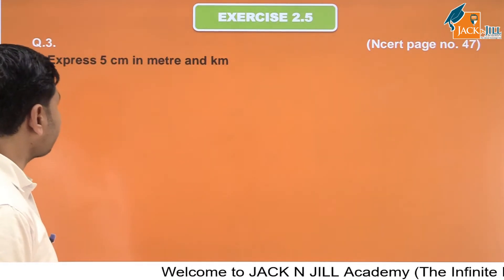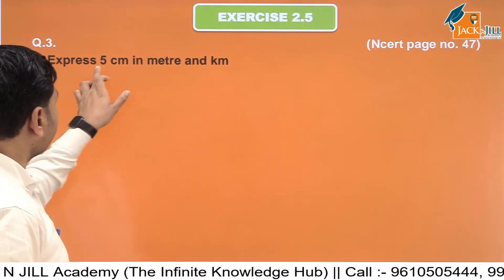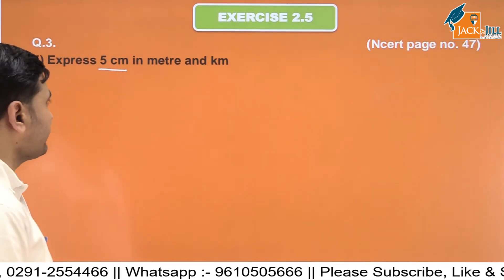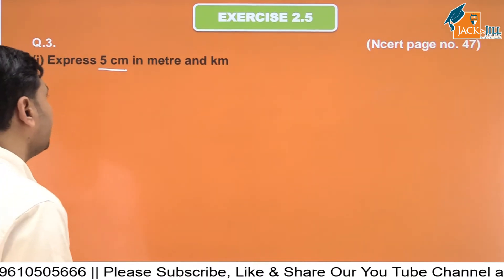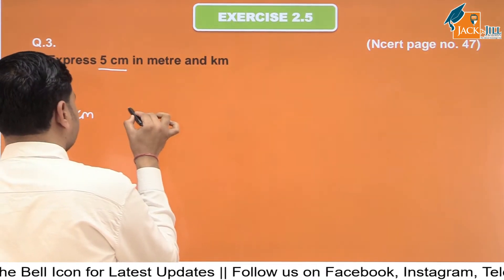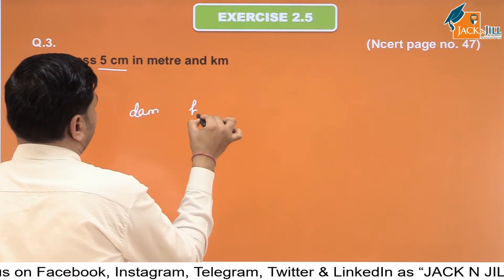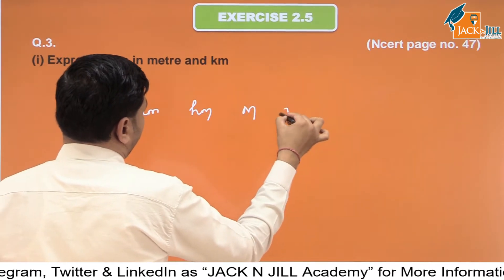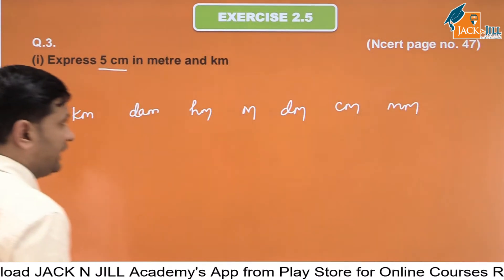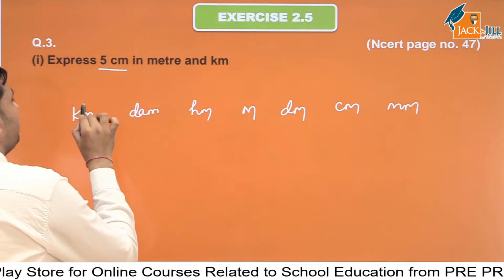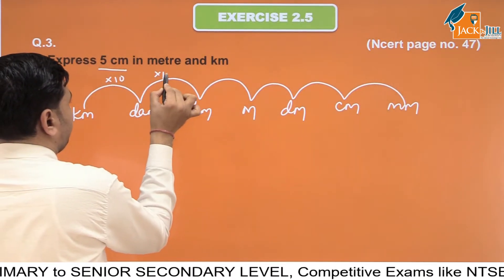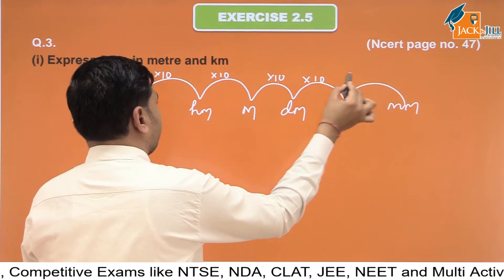Next: Express 5 centimeter in meter and kilometer. Unit conversion का basic idea लेते हैं। सबसे बड़ी unit kilometer, फिर hectometer, decameter, meter, decimeter, centimeter, millimeter। अगर हमें left से right जाना है तो हर step में हम 10 का multiply करेंगे। जैसे kilometer को meter में change करना है तो 3 step आगे जा रहे हैं, तो 10 × 10 × 10 = 1000 से multiply करेंगे। Meter को centimeter में करना है तो 2 step आगे, तो 100 से multiply करेंगे।